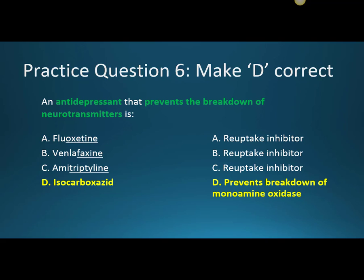Now we'll make D correct. An antidepressant that prevents the breakdown of neurotransmitters is D, isocarboxazid. A, B, and C are incorrect because those are all reuptake inhibitors — they prevent the reuptake of neurotransmitters. But isocarboxazid works by inhibiting monoamine oxidase, which usually breaks down neurotransmitters. By inhibiting the monoamine oxidase enzyme, we increase levels of neurotransmitters like serotonin, norepinephrine, and dopamine.